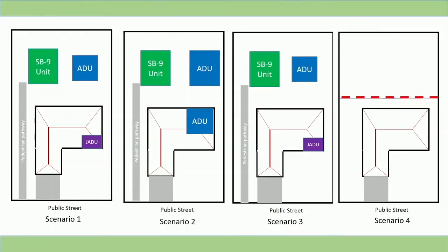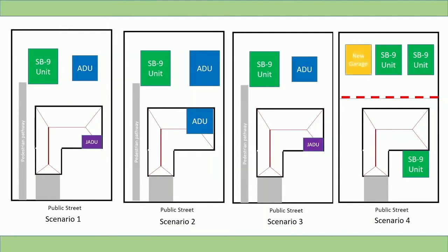In the fourth scenario, a property developed with one single-family residence can split the lot in half and add one SB9 unit to the lot with the main residence, plus two SB9 units on the newly created lot. No additional units including an ADU or JADU may be added to either property. Parking would be in an enclosed garage on the individual lots, and access to the rear property would be from a new driveway. Unlike ADU laws, SB9 allows cities to require enclosed garage parking, which may be in individual garages, shared side-by-side garages, or shared tandem garages.